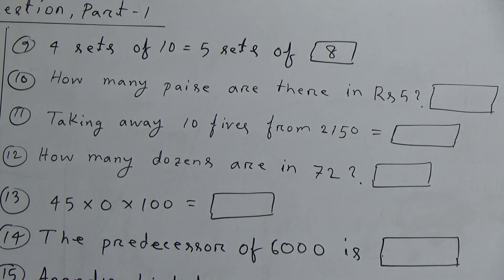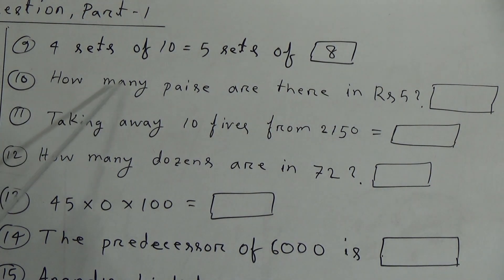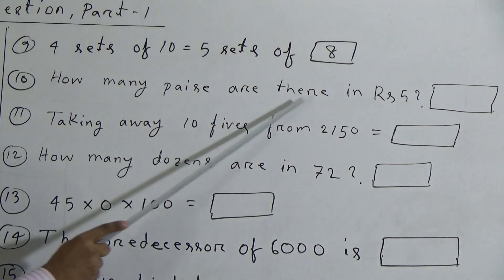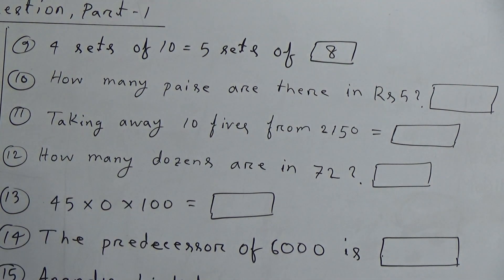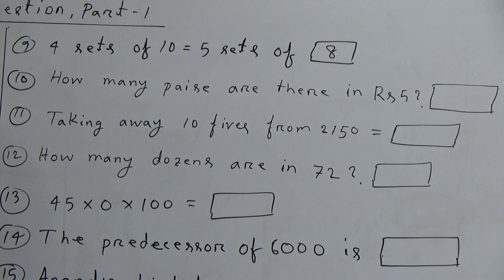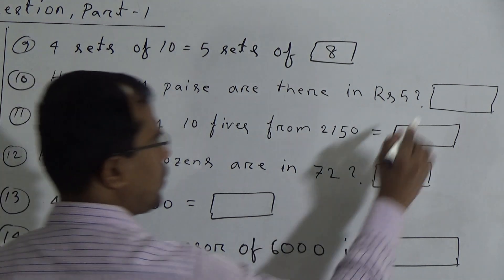Tenth question: how many paisas are there in 5 rupees? We know that 1 rupee is equal to 100 paisa. So 5 rupees is equal to 500 paisa. Very easy.